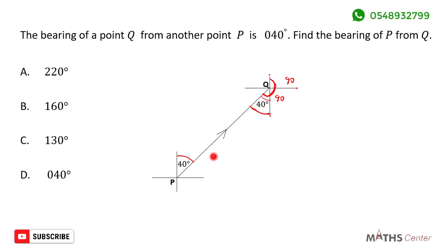So the back bearing will be equal to 90 degrees plus 90 degrees which will give us 180 degrees plus 40 degrees. So we can say that the bearing of P from K is equal to 180 degrees plus 40 degrees and this will give us 220 degrees.